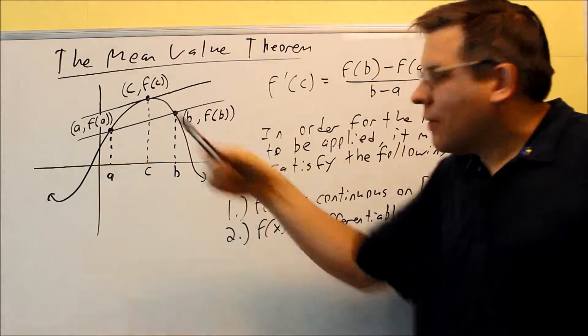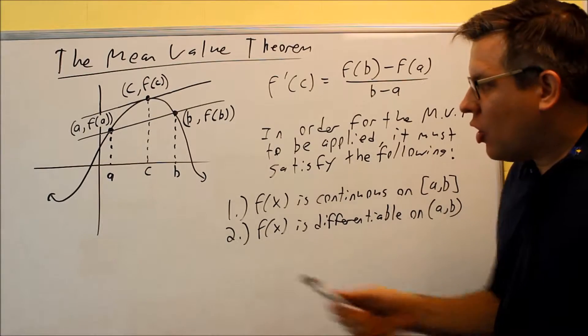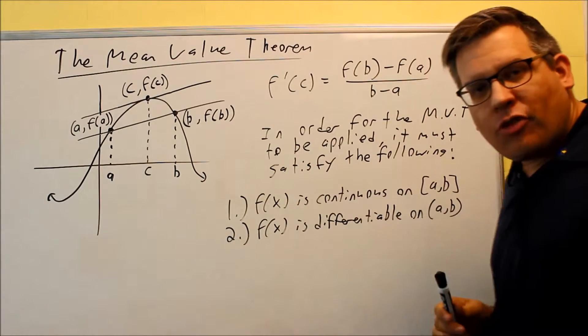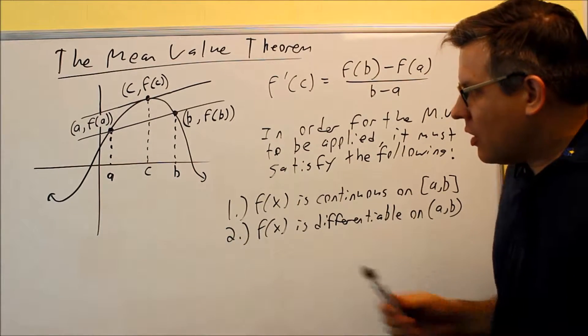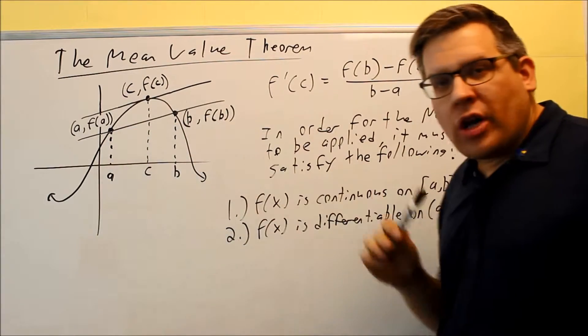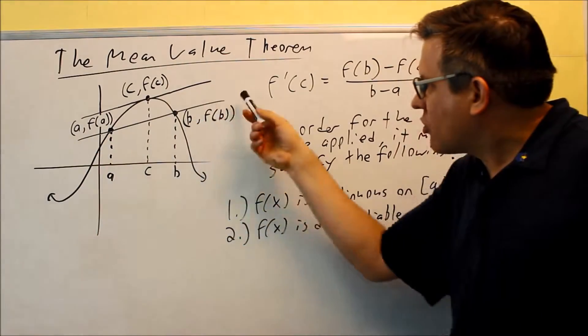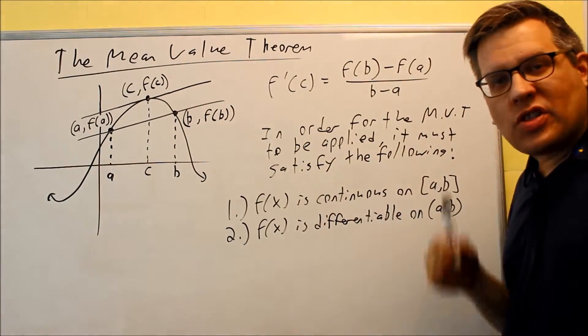We're first going to take a look at this picture right here that will highlight what mean value theorem means. We're going to take an interval from A to B to look at. At A and B, we're going to look at these two points, and we want to find the slope of a line that goes through those two points at A and B.